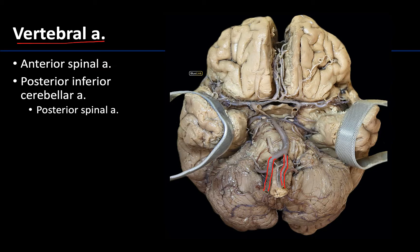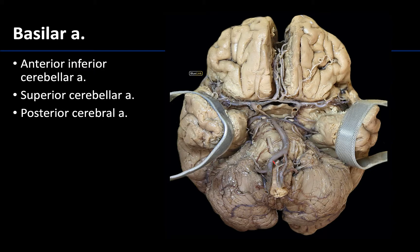The vertebral artery has three branches in this area that we want you to be able to identify. Let's start with the anterior spinal artery, which you can see right here — it's a small artery. You can see it receives contributions from both vertebral arteries, and it will run down the midline of the medulla, which will eventually transition into the spinal cord. It will be considerably smaller than the vertebral artery, so if you see something right down the midline of the medulla, you know you're likely looking at the anterior spinal artery.